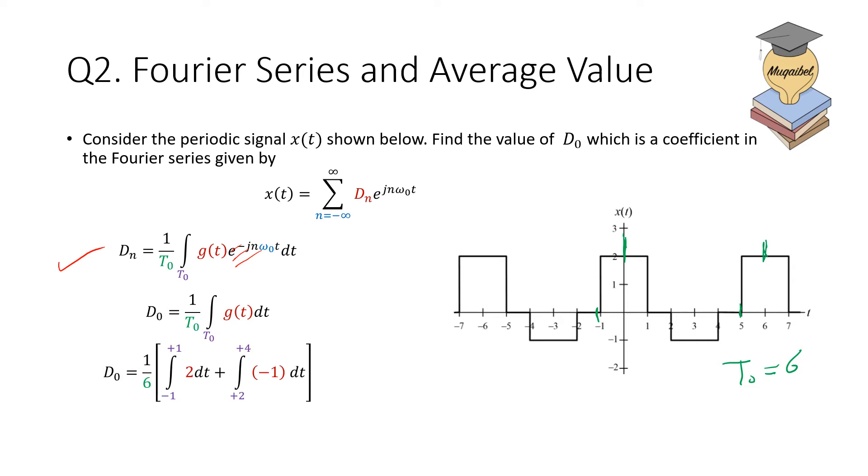Then we can also execute the integration. Remember that the function here—I'm showing you with colors—so the function here is either 2 between minus one and one, and it's going to be minus one between two and four. Doing the integration will give you the area under the curve. The area is clearly here 4; the area here is minus 2. So in total I will get 2 divided by 6, and that's equal to one third.